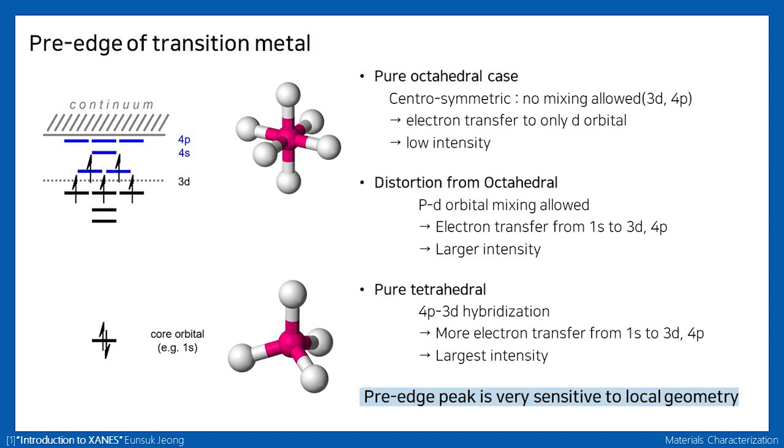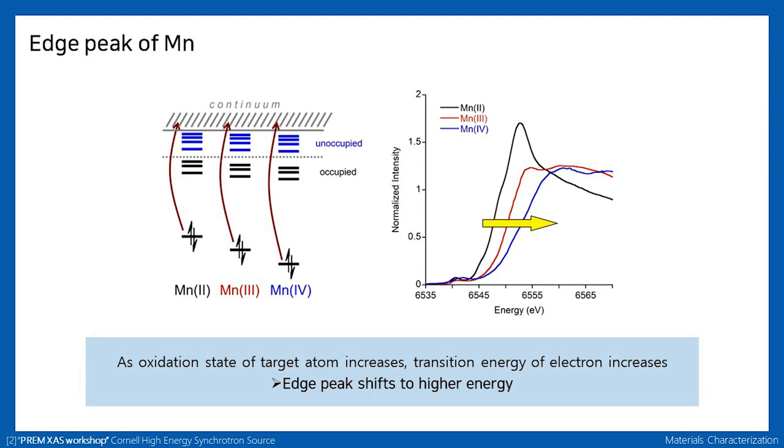When the coordination is tetrahedral, hybridization of the 3d and 4p orbitals occurs, and electrons can easily excite to both 3d and 4p orbitals, leading to the highest intensity of the pre-edge peak. The following graph is the edge peak of manganese ion having positive 2, 3, and 4 charges. As we can see from the data, as the oxidation state increases, the edge peak shifts to the higher energy region.